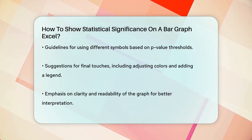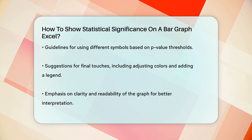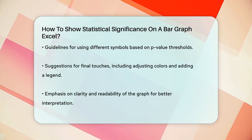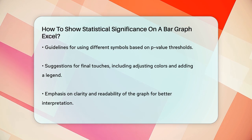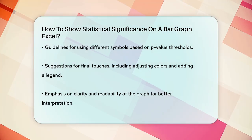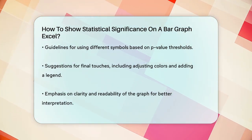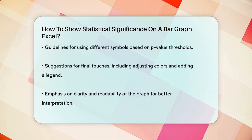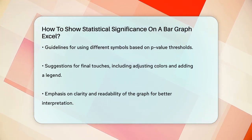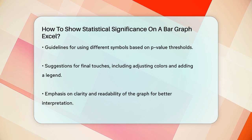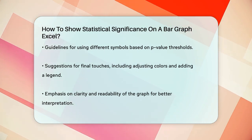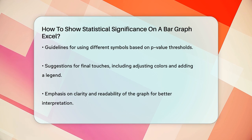Final touches. To make your graph even clearer, you can adjust the colors, labels, and error bar styles. Ensure that the symbols you use are consistent and easy to understand. You might also include a legend to explain what each symbol means. By following these steps, you can effectively show statistical significance on your bar graph in Excel, making your data more interpretable and visually appealing.